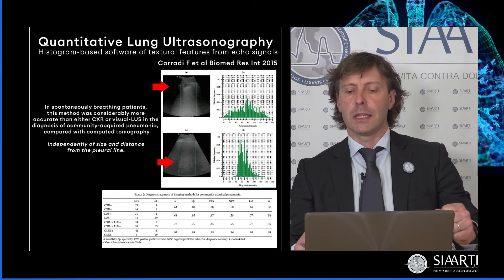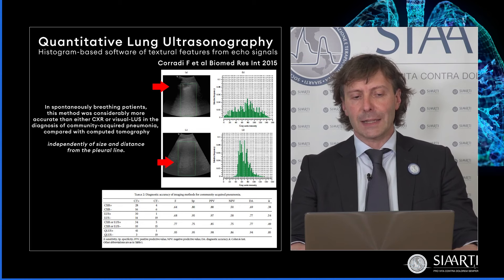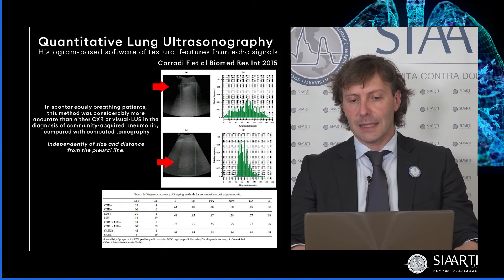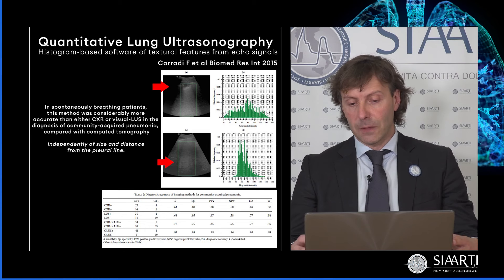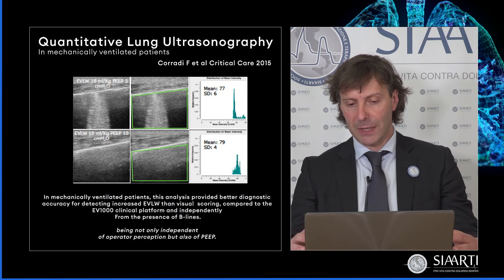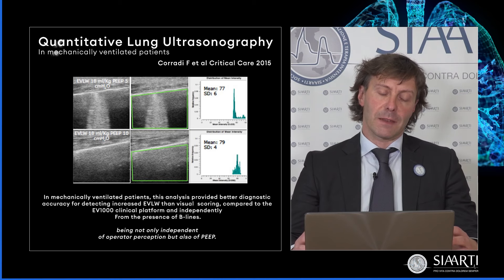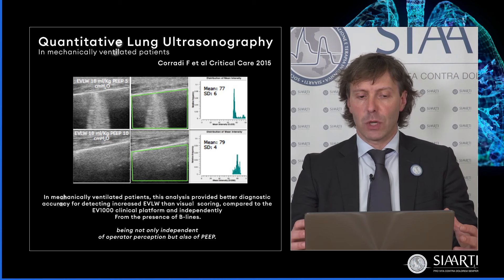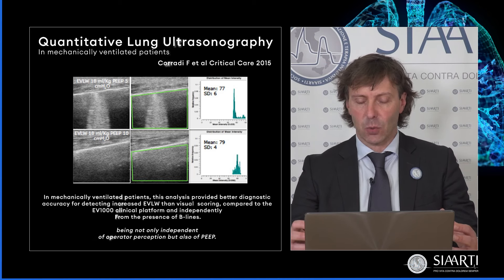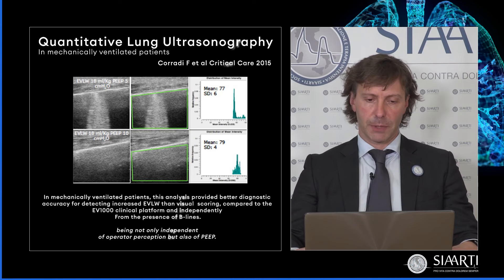Questo approccio si è dimostrato superiore alla radiografia del torace, all'ecografia clinica visuale focalizzata e all'insieme delle due metodiche, superando il limite della distanza fisica del consolidamento dalla linea pleurica. Un'altra applicazione è quella di sintetizzare la capacità dell'ecografia di quantificare la gravità della sindrome interstiziale, quindi la severità dell'interessamento polmonare, e dall'altro di essere utilizzata come monitoraggio dell'areazione polmonare. Nel momento in cui un paziente viene sottoposto a ventilazione meccanica, le linee B non vengono più visualizzate, impedendo di monitorizzare nel tempo la progressione della malattia.